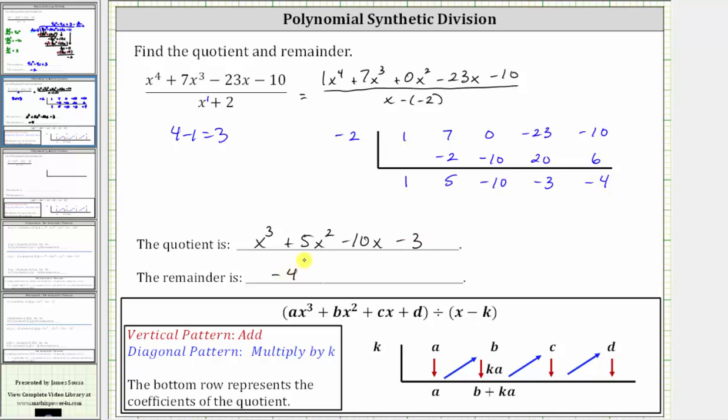I also want to mention, sometimes the final result is expressed in a slightly different way, where we have the quotient of x cubed plus five x squared minus 10x minus three.